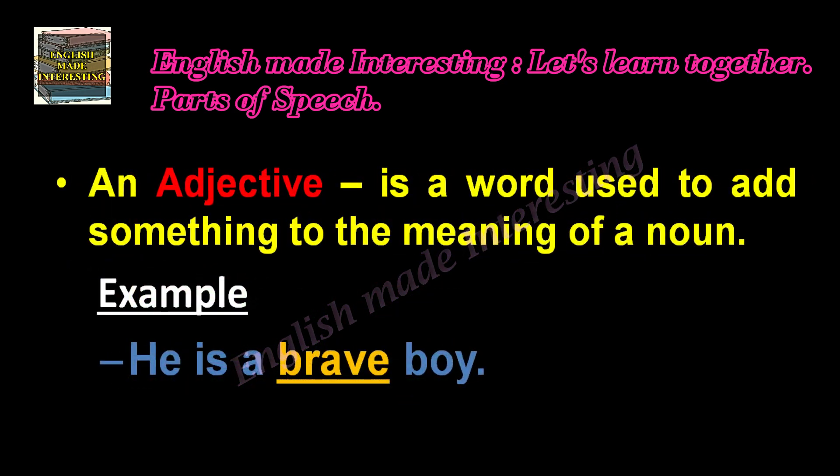Now what's an adjective? An adjective is a word used to add something to the meaning of a noun. Example: 'He is a brave boy.' Boy is a common noun. Brave is something added to the meaning of the noun, so brave is the adjective here.